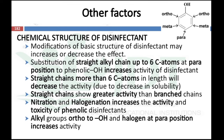The next factor is the chemical structure of the disinfectant. Modification of the basic structure of a disinfectant may either increase or decrease the disinfectant effect. For example, substitution of a straight alkyl chain up to 6 carbon atoms at the para position of the phenolic OH group will increase disinfectant action, while a straight chain of more than 6 carbons at the para position will decrease the activity of phenolic compounds. Combining straight chain with branched chain substitution will increase the activity of disinfectants like phenols. Nitration and halogenation will increase the activity and toxicity of phenolic disinfectants. An alkyl group at the ortho position to the OH group and a halogen at the para position to the OH group will also increase the activity of phenolic compounds.